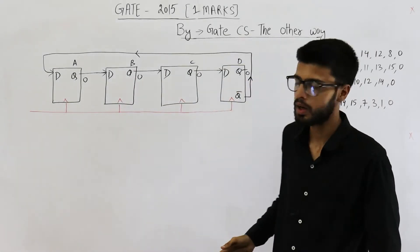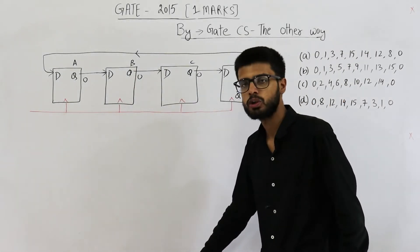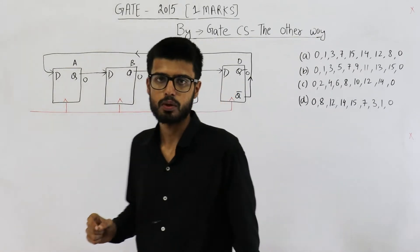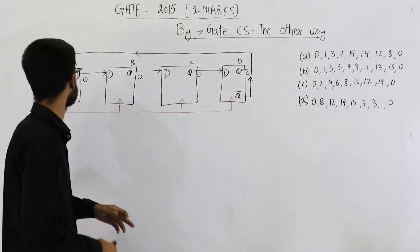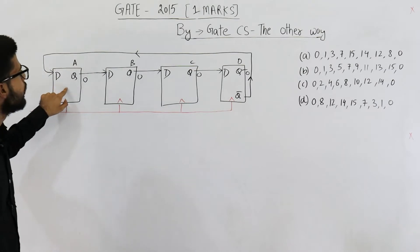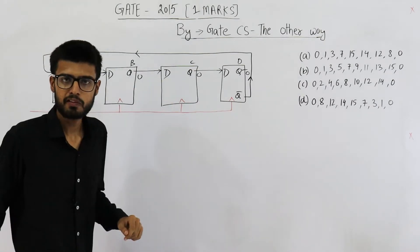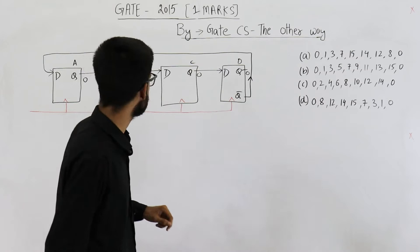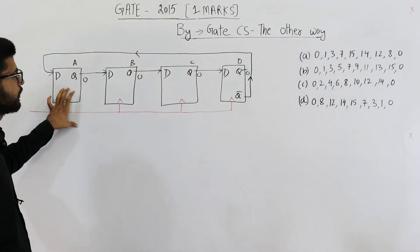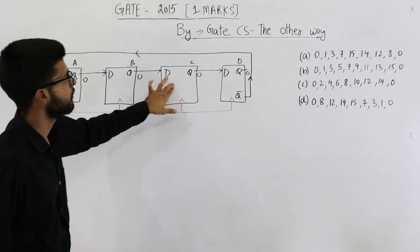So we need to determine the counting sequence of a Johnson ring counter or a twisted ring counter. What is a twisted ring counter? In such a counter, we use D flip-flops. They have mentioned 4-bit, that means we are going to use 4 D flip-flops. First, second, third, fourth.